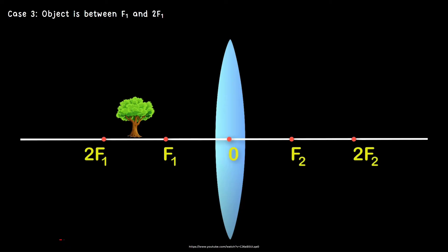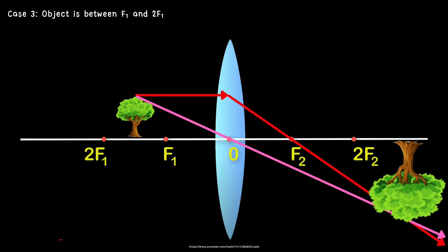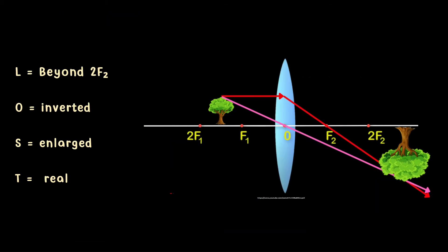Next, our object is between F1 and 2F1. Again, same steps. Watch carefully. As you can see, there is an intersection. Therefore, this is where our image is. Let us know the properties of the image. The location is beyond 2F2. The orientation is inverted. The size is enlarged. And the type of image is real.